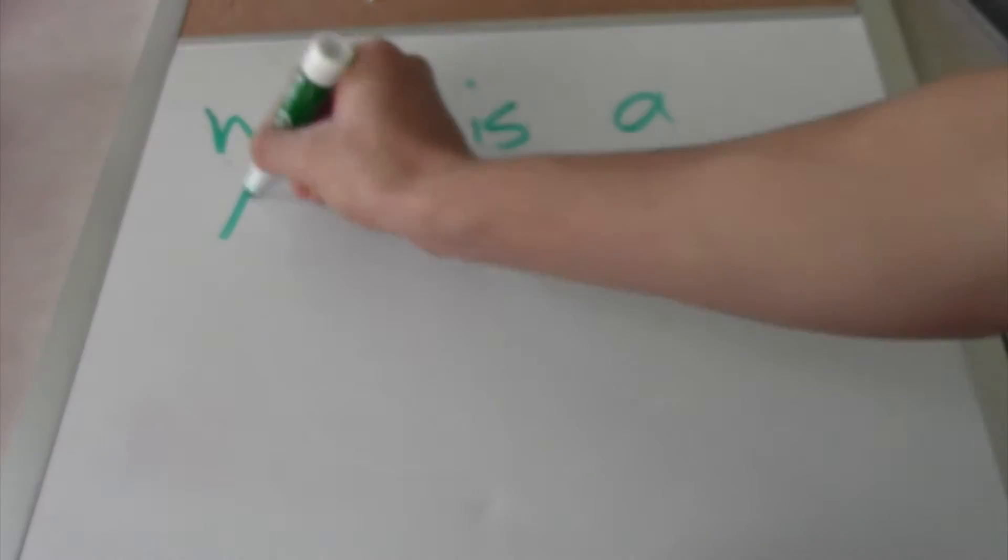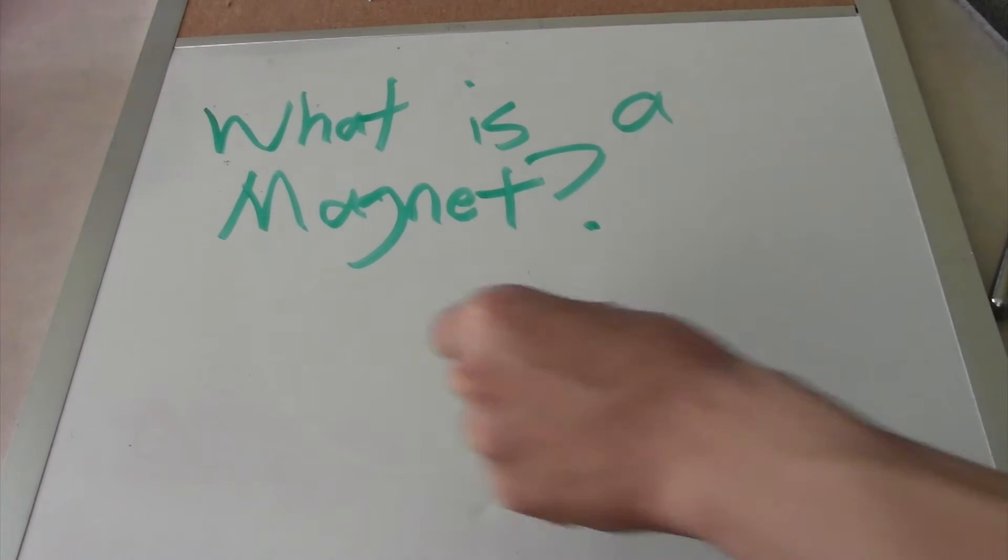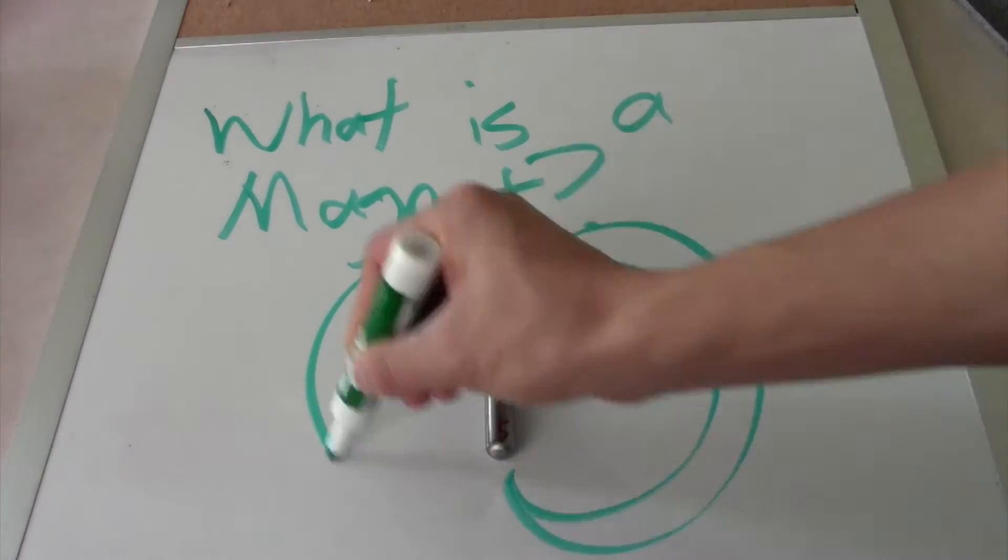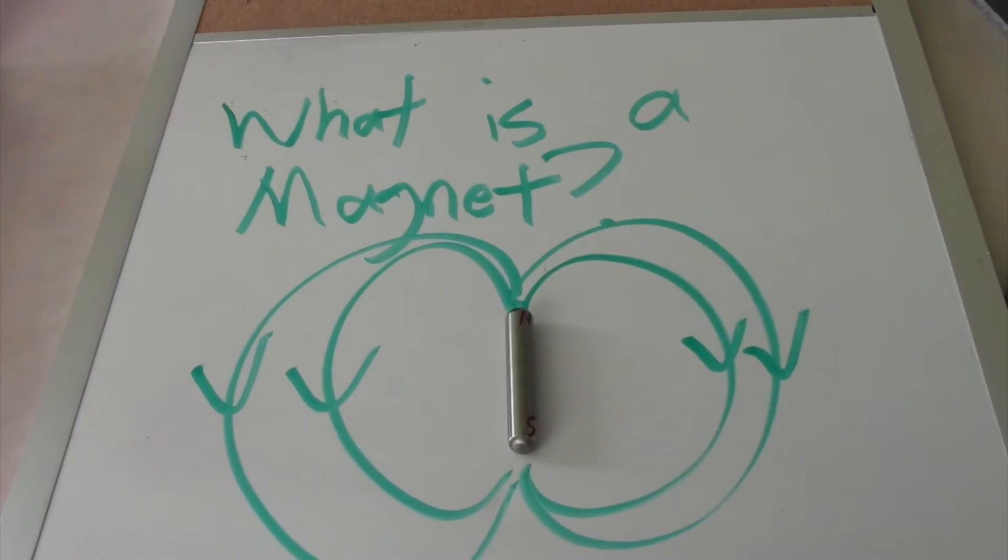A magnet is an object that gives off a magnetic field. This field is created by the motion of electrons in the atoms of the material. We represent the magnetic field using field lines. We call the end where the lines leave the magnet the north pole and the end where the lines enter the south pole.